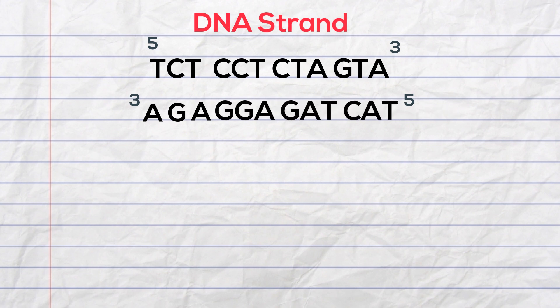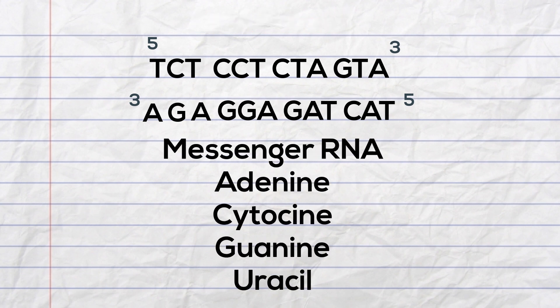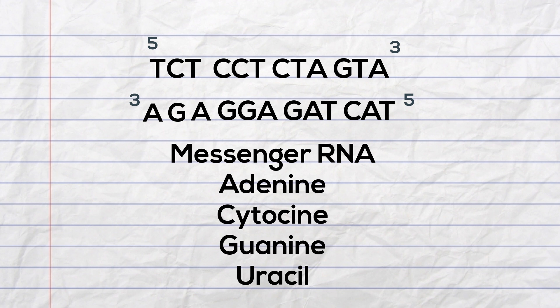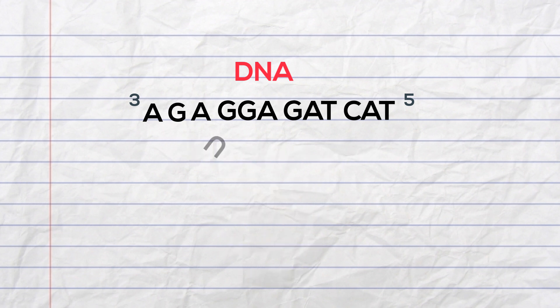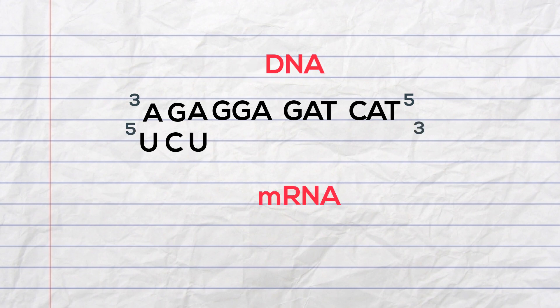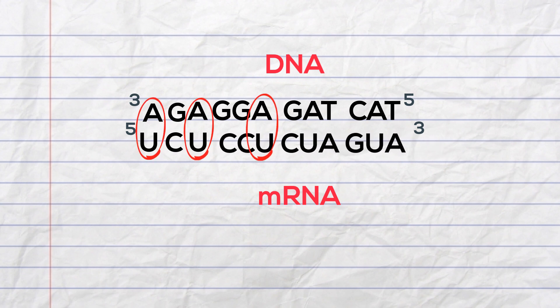Now the messenger RNA is similar to DNA, but instead of thymine, you have uracil. During protein synthesis, the DNA has unzipped and we're left with the complementary strand. So A will pair with U, G with C, A with U, and then you'll continue. Note that A pairs with U, and T pairs with A.